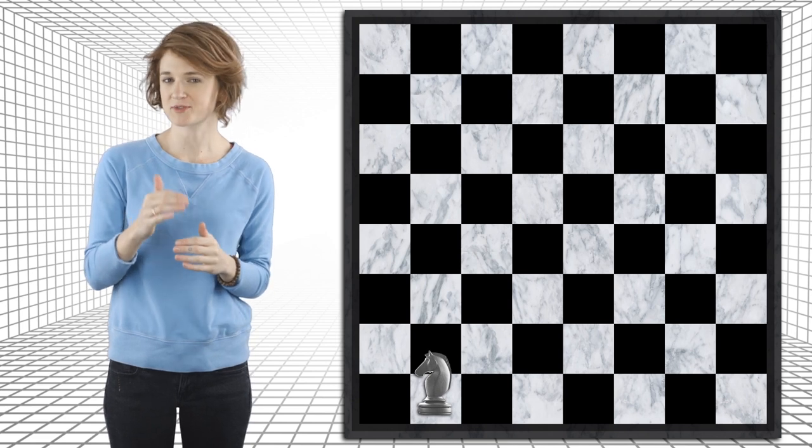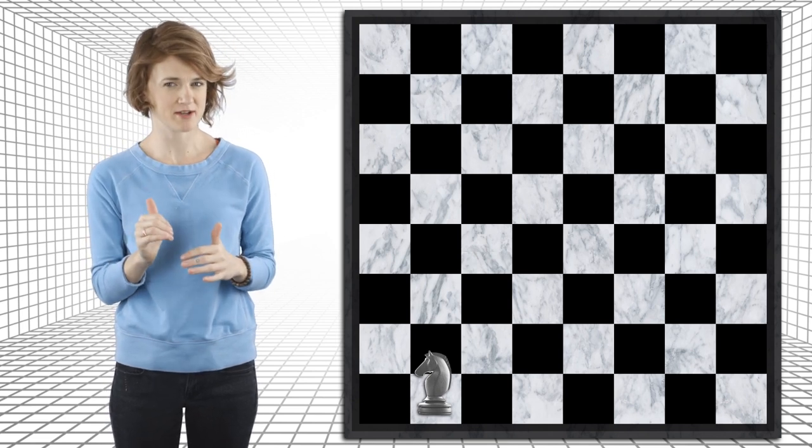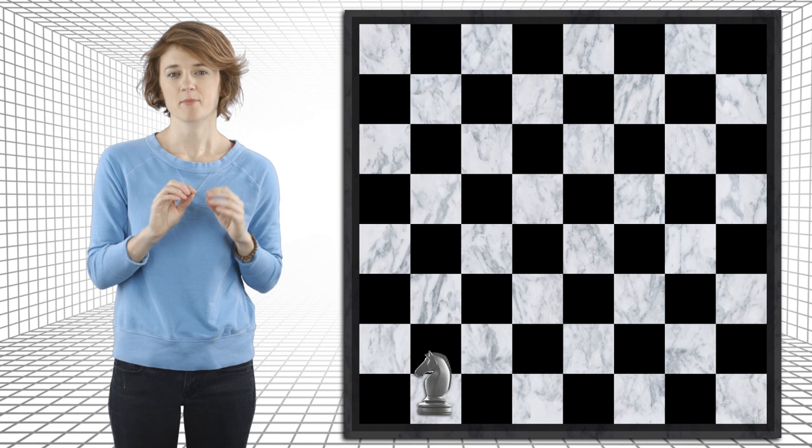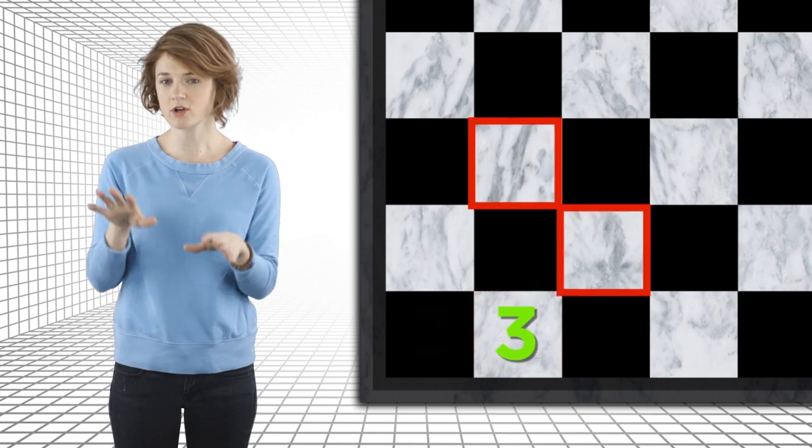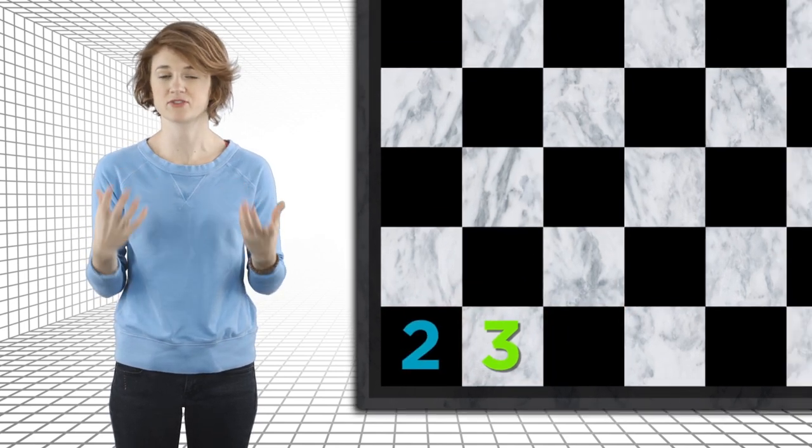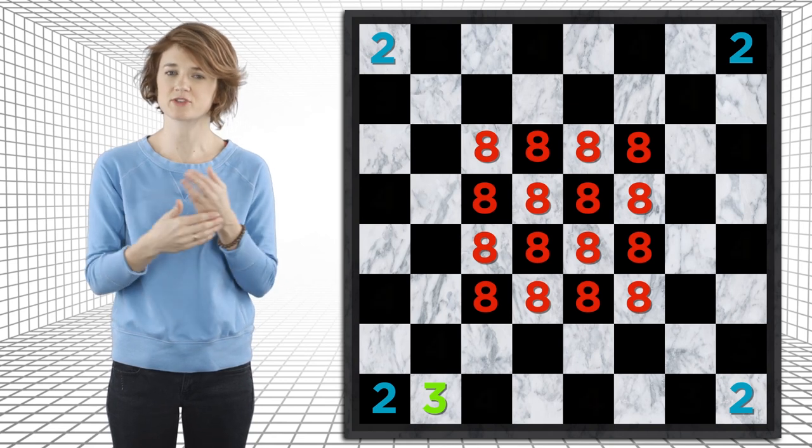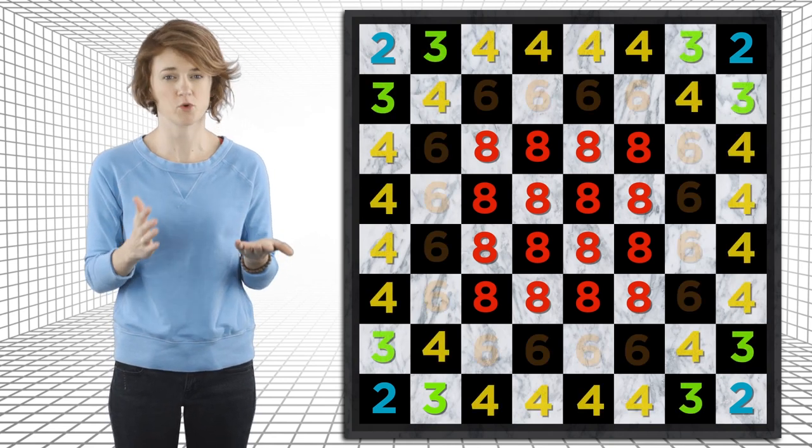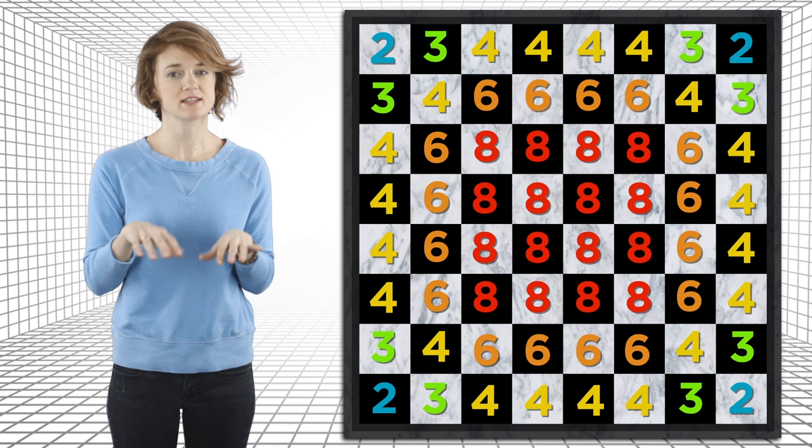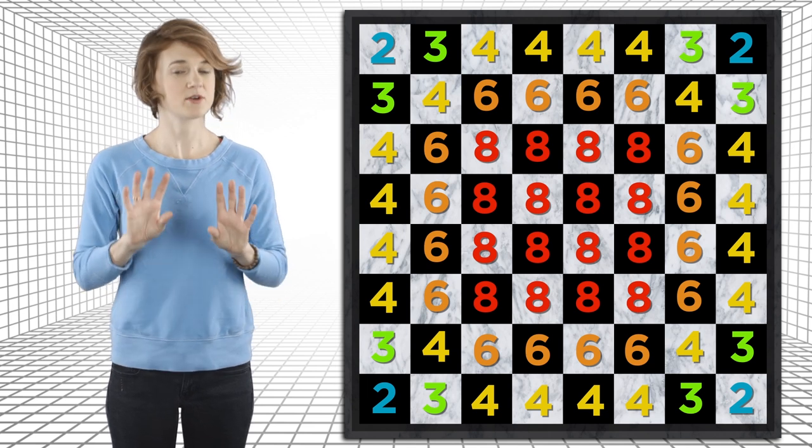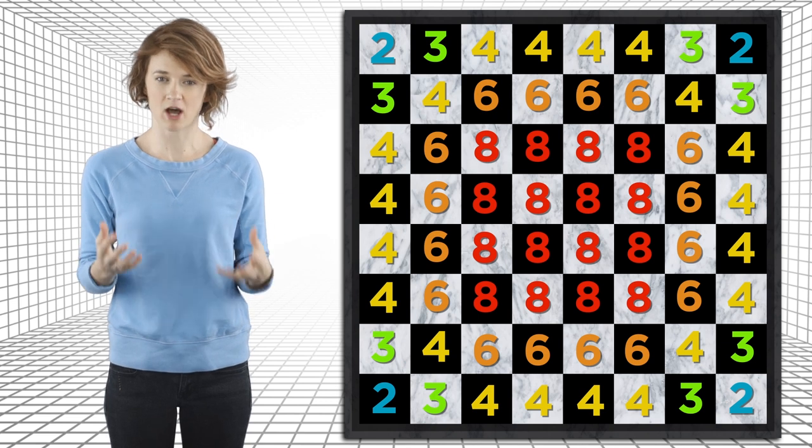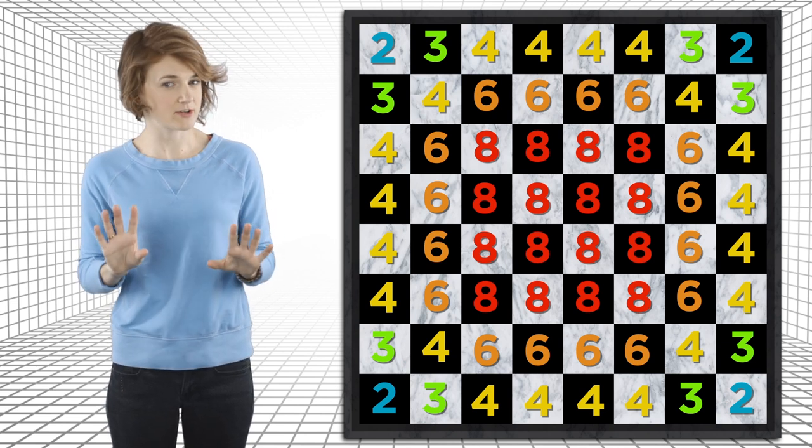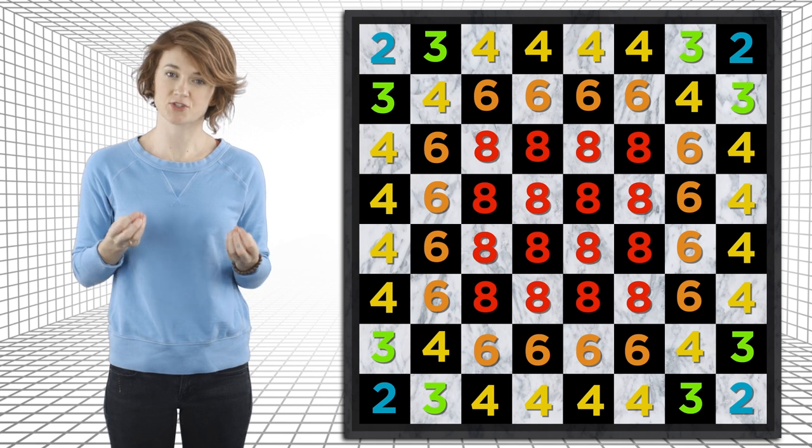First, we're going to fill a chessboard with knights in a particular way. On each square, place the number of knights that corresponds with the number of possible moves a knight can make from that square. So the corner squares each have two knights, and the central squares each have eight knights, and the ones closer to the edges either have three, four, or six knights. This is how many knights we'll put on each square. Now here's my big claim. If all the knights take one random hop, then, on average, the same number of knights will end up on each square.